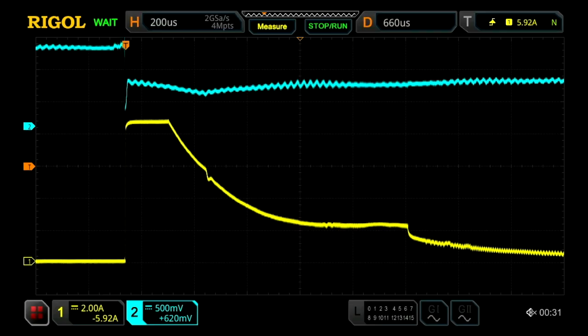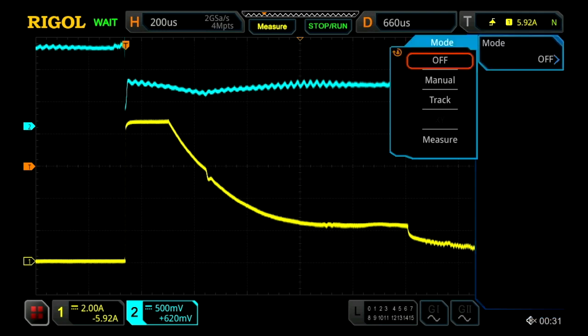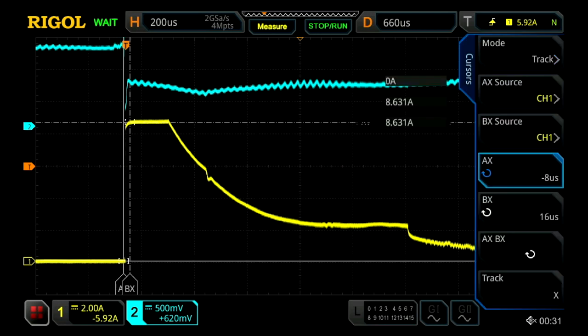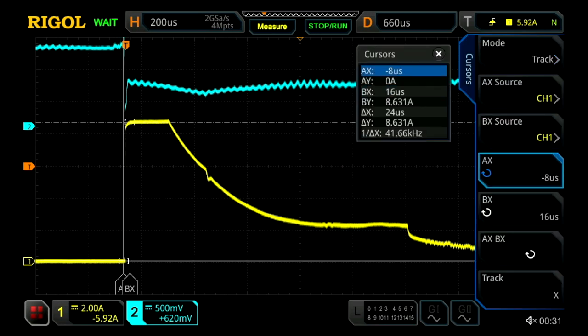What we can do is, I've already set up the scope for it, we can now take a couple measurements. We can go into our cursor menu and turn those on. This instrument allows us to use both manual and track cursors. Because it's easier and quicker, I'm going to use the track cursors. With that we'll see two cursors down over in the left hand side of the screen. They're going to be displayed on the bottom and we can move those around with our intensity knob.